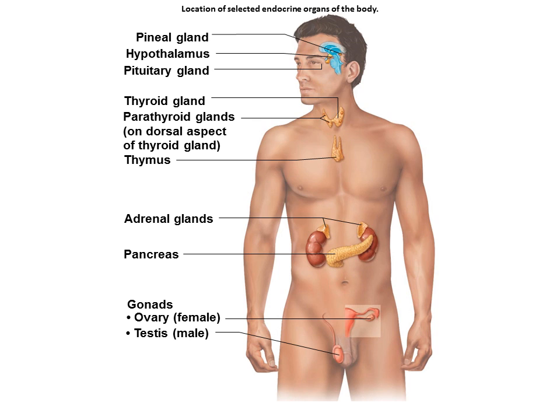Endocrine glands shown here in the brain are the pituitary and pineal gland. On the neck, thyroid and parathyroid glands, and the adrenal gland on top of the kidney. The hypothalamus is a neuroendocrine organ in the brain that controls hormone secretion in the pituitary gland.